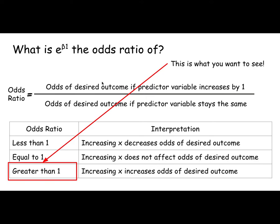What you want to know really is if somebody spends one more year in prison, does that give them greater or less odds than somebody who spent that one year less in prison? So if I just increase that predictor variable by one, what does that do to my odds of the desired outcome or undesired outcome?